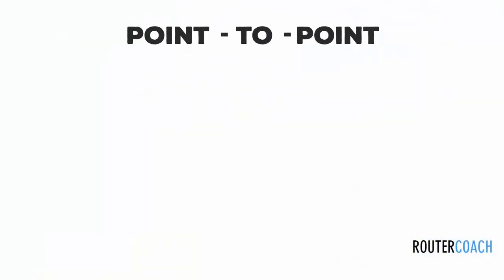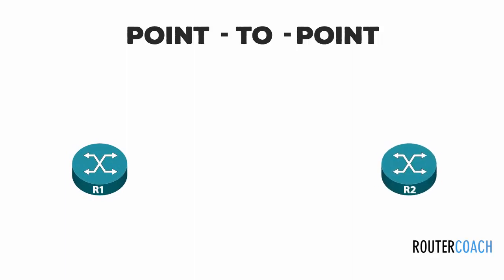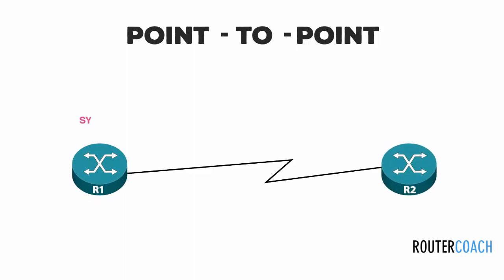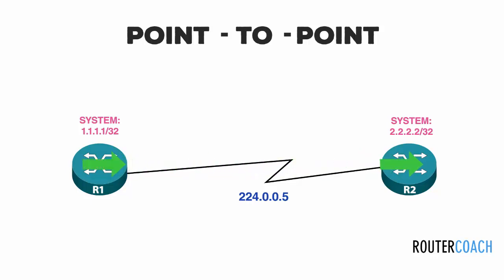The point-to-point network type always connects just two neighbours and is the default option for serial connections. Because of this there is no need for a DR/BDR election and all OSPF packets are sent to the all-SPF routers multicast address. This is 224.0.0.5, but because this is a point-to-point network, when the packet is sent out of the router interface it has nowhere to go except the router at the other end.